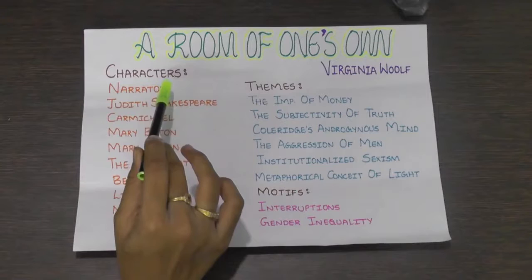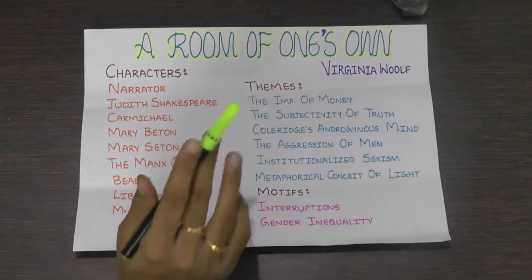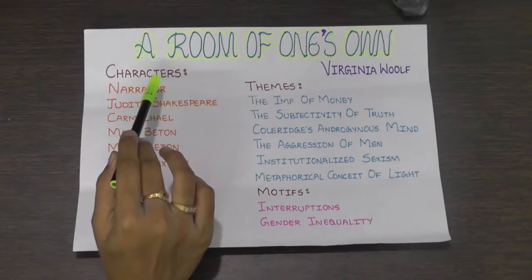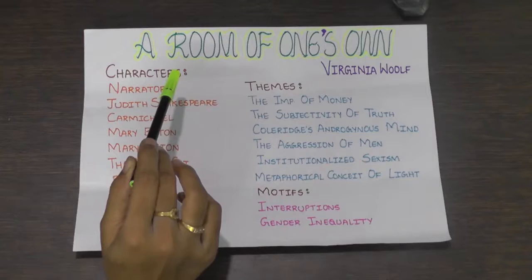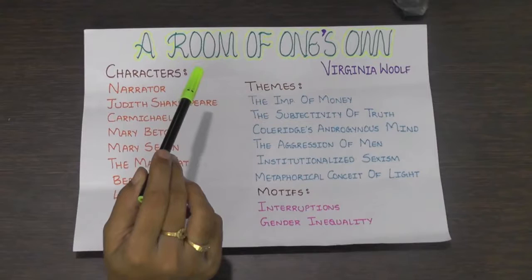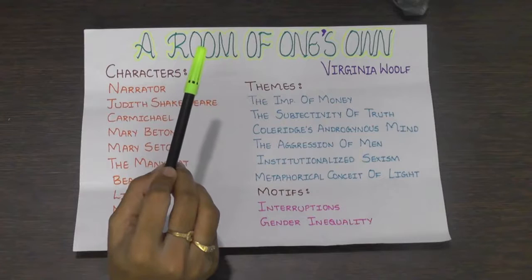Woolf states: intellectual freedom depends upon material things, poetry depends upon intellectual freedom, and women have always been poor — not for 200 years merely, but from the beginning of time. Woolf uses this statement to explain why so few women have written successful poetry, as women have faced frequent interruptions because they are so often deprived of a room of their own in which to write.